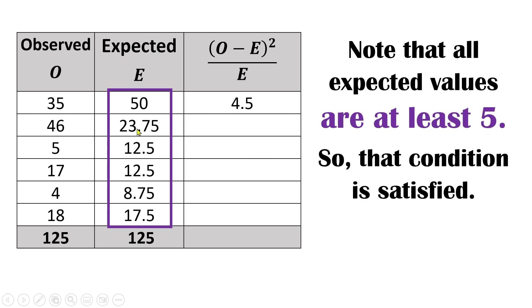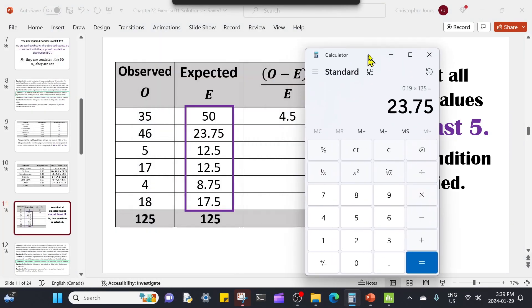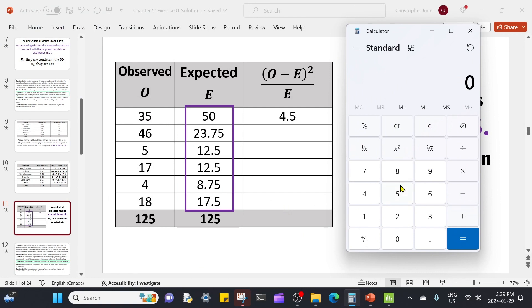Now we're going to calculate the contribution each observation makes toward the chi-squared statistic. We calculate this squared deviance scaled by the expectation — the statistical distance between each observation and its expectation — then add those up to get our chi-squared statistic. Where did the 4.5 come from? We take the observation (35) minus what was expected under the null (50), square that difference, and then divide by the expectation (50). We get 4.5 — the contribution to the chi-squared statistic made by this first observation.